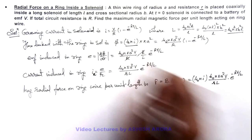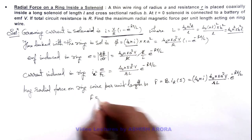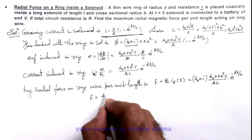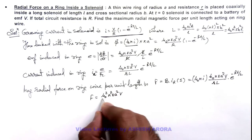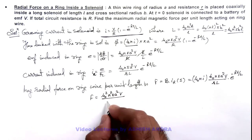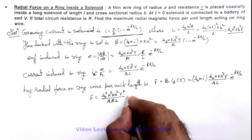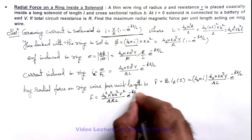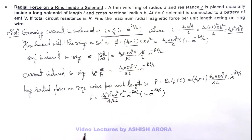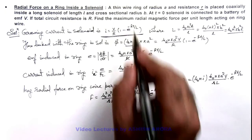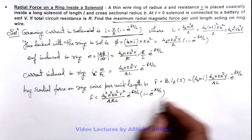Substituting the solenoid current i equals (V/R)·(1 minus e^(-Rt/L)), the full expression for force per unit length on the ring becomes: F = μ₀²n²πa²V²/(rRL) · e^(-Rt/L) · (1 minus e^(-Rt/L)). This is the radial force per unit length on the ring, and we are required to find its maximum value.